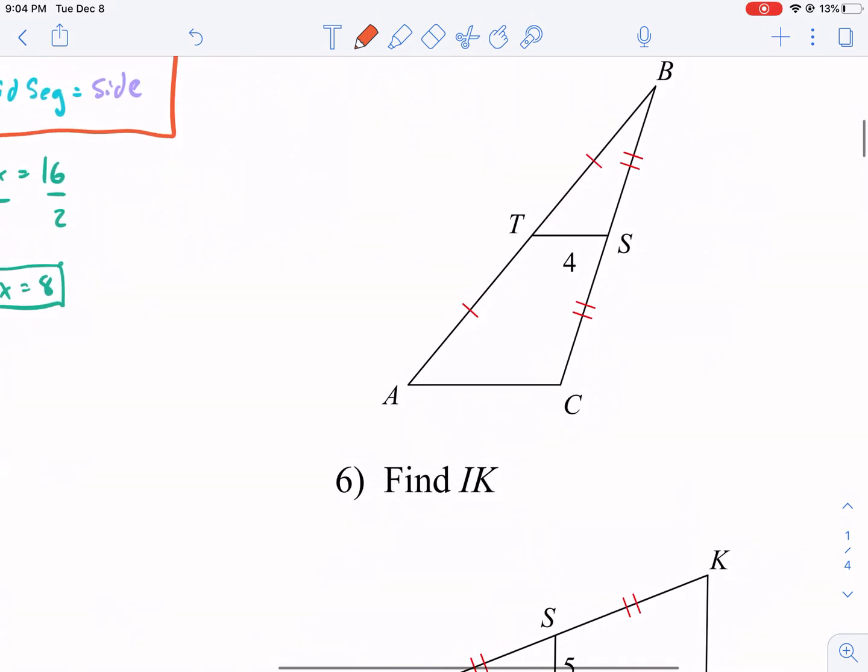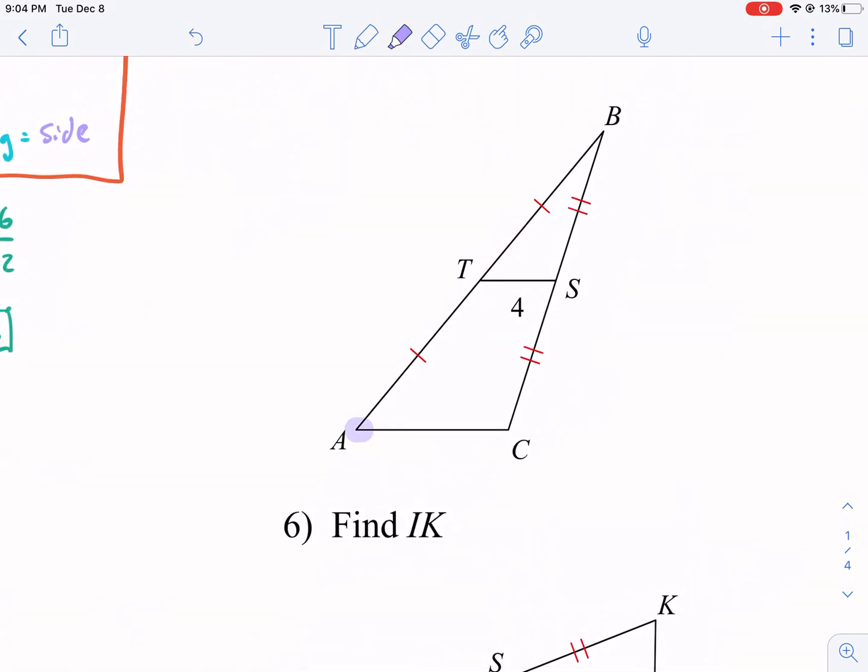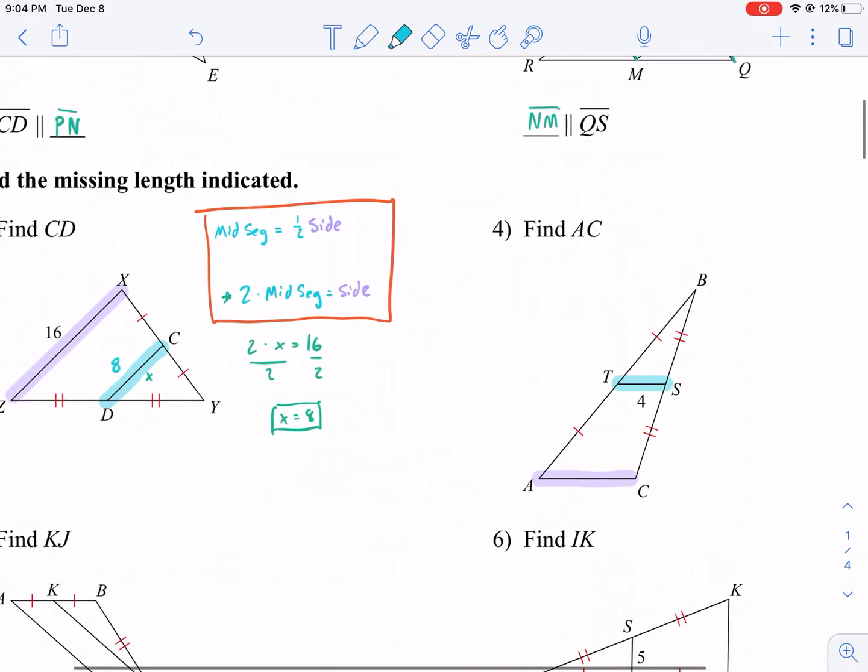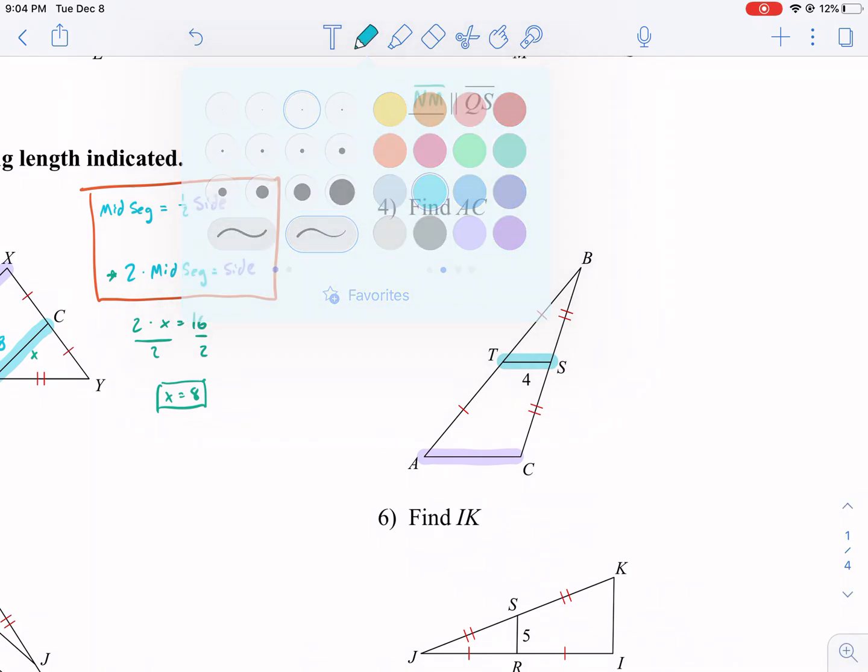Find AC. So here we have AC, we're going to identify it. This time, it's not a mid-segment. This time, the side is parallel to is the mid-segment. So what do we do? We could go back to our formula. So our mid-segment, we know is four times two, I'm going off of this in case you're not following what I'm doing.